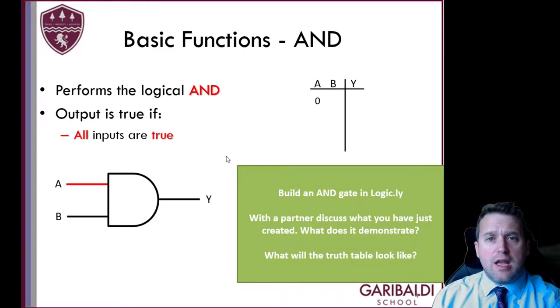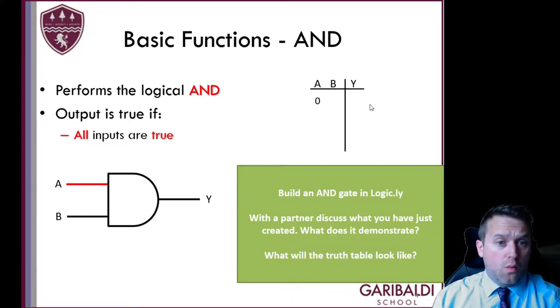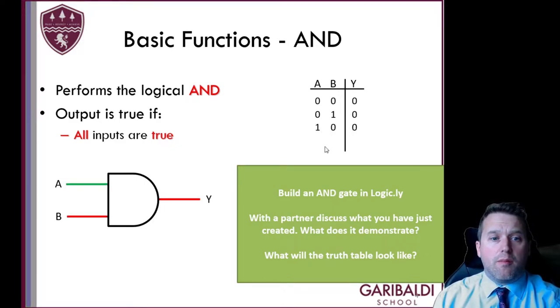This is the way it behaves. Now up here is the truth table which is showing whether the inputs are on or off and what is happening. So when both are off the AND gate is off. When one of them is on it's still off. When the other one is on it's still off. But when we have a condition where both of them are on then this gate is triggered on. So that is the AND gate and how it behaves.